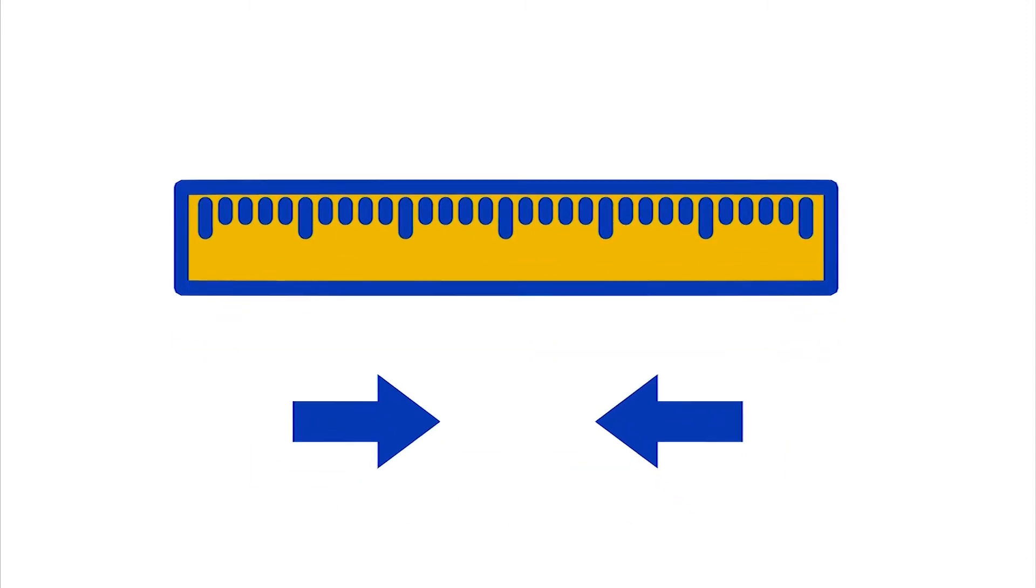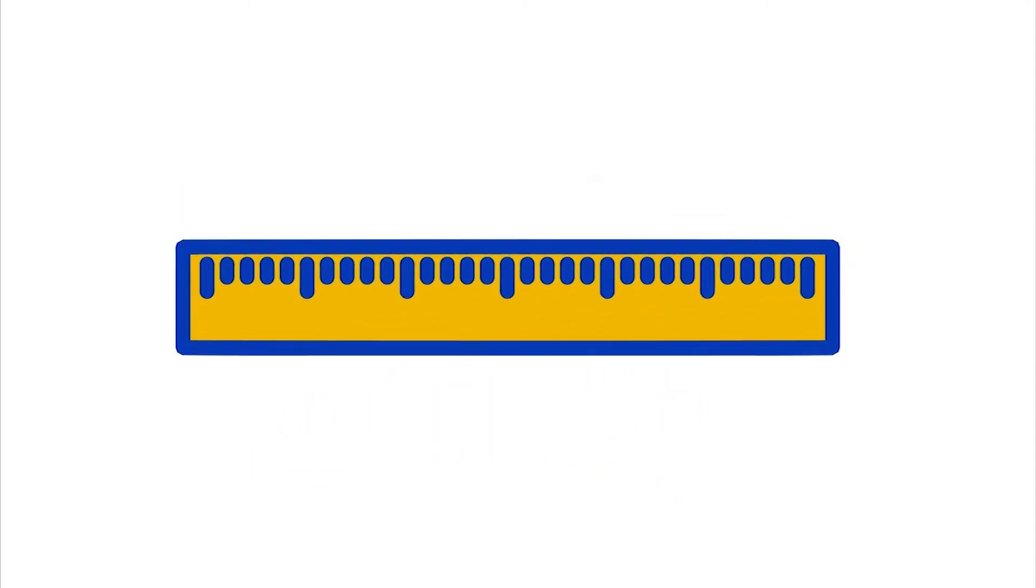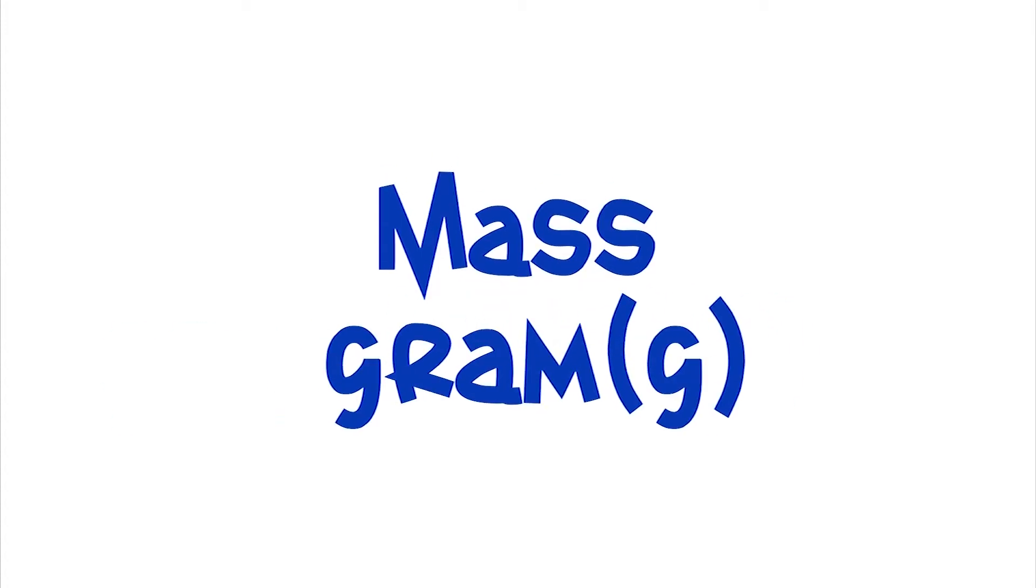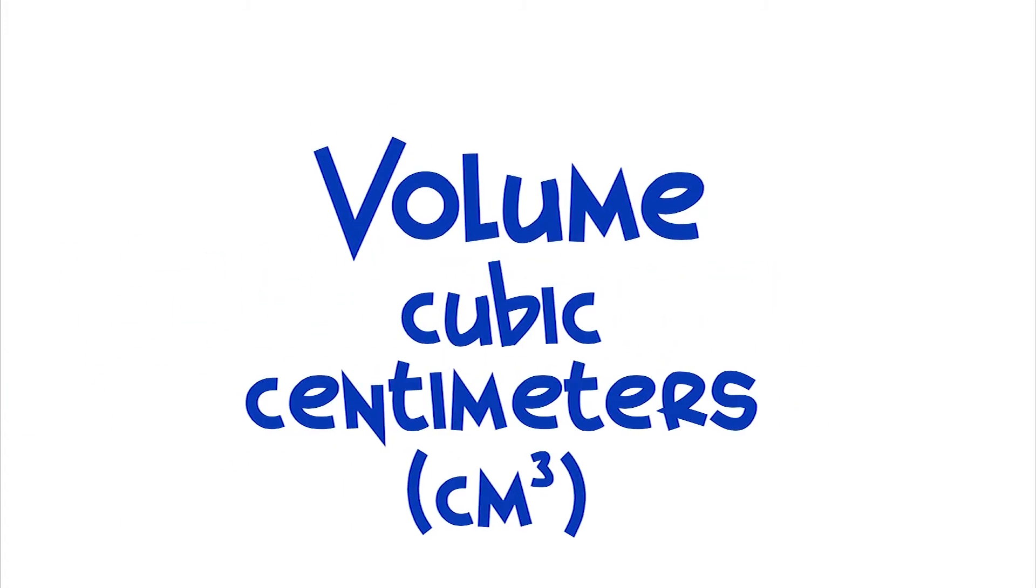To measure the density of a substance, we use a mass measure, usually the gram, and the measure of volume, cubic centimeters.